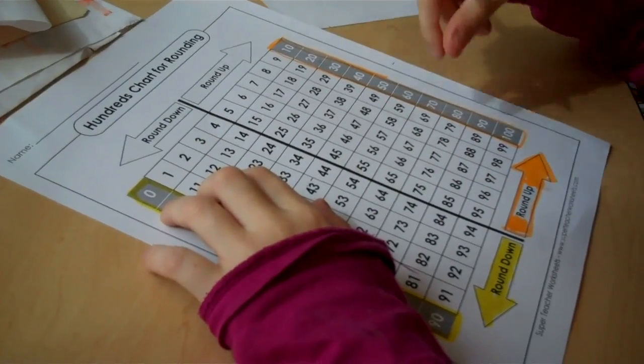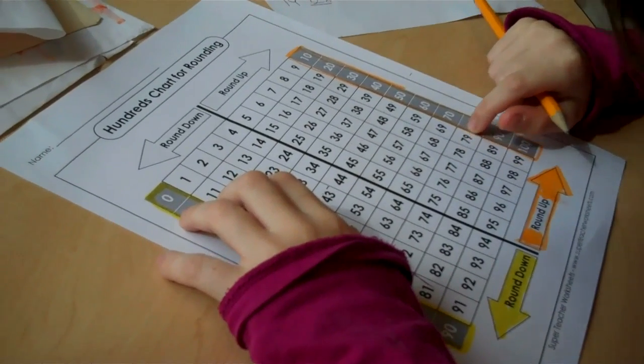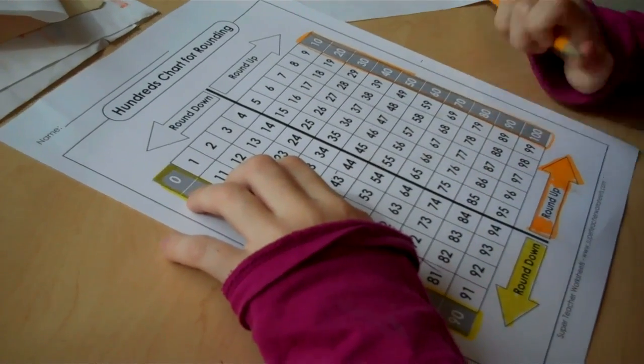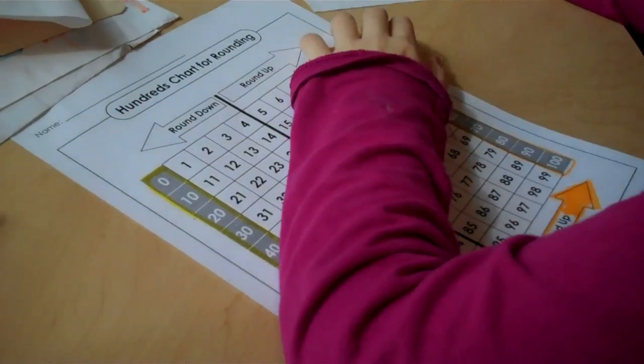Where's my arrow telling me we have to go to? Round up. Round up. So what number does 79 round to? Eighty. Okay. Mark it down.